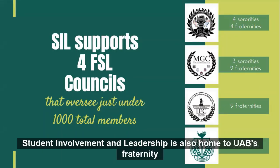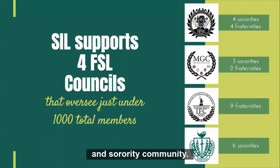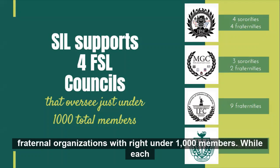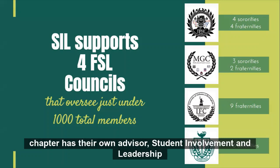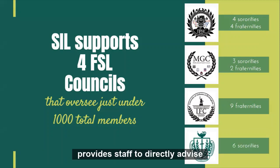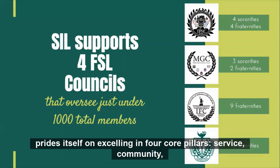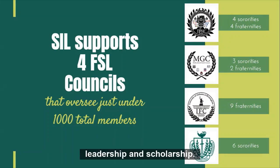Student Involvement and Leadership is also home to UAB's fraternity and sorority community. This community includes four governing councils representing 28 fraternal organizations with just under 1,000 members. While each chapter has their own advisor, Student Involvement and Leadership provides staff to directly advise each of the councils. UAB's fraternity and sorority community prides itself on excelling in four pillars: service, community, leadership, and scholarship.